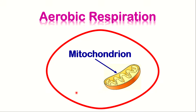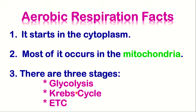Generally speaking, aerobic respiration takes place in the mitochondria — mitochondrion for a single one — and these are organelles within cells. An important fact about aerobic respiration is that it starts in the cytoplasm, and most of it occurs in the mitochondria. We generally state that aerobic respiration takes place in the mitochondria, but now you know it starts in the cytoplasm.